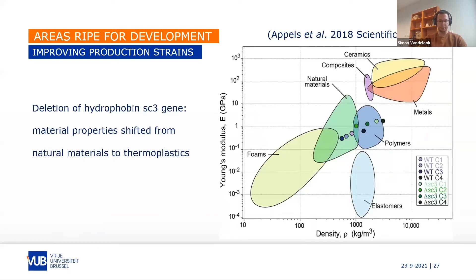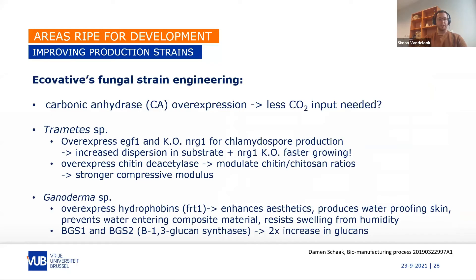Here is an example of a successful genetically engineered strain by Ecovative — the deletion of the hydrophobin gene resulted in a shift of material properties from natural materials to thermoplastic-like properties. Ecovative is very active in this space as they see the enormous potential, engineering both their fungal strains and bacteria used in co-cultivation setups.